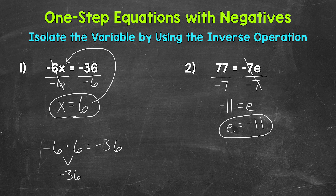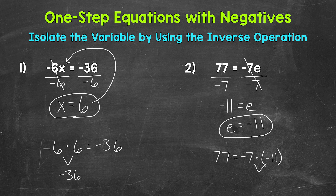Let's check that solution by plugging negative 11 in for e. We have 77 equals negative 7 times negative 11. A negative times a negative equals a positive, so negative 7 times negative 11 does equal 77 — a positive 77. We have the correct solution: e equals negative 11.